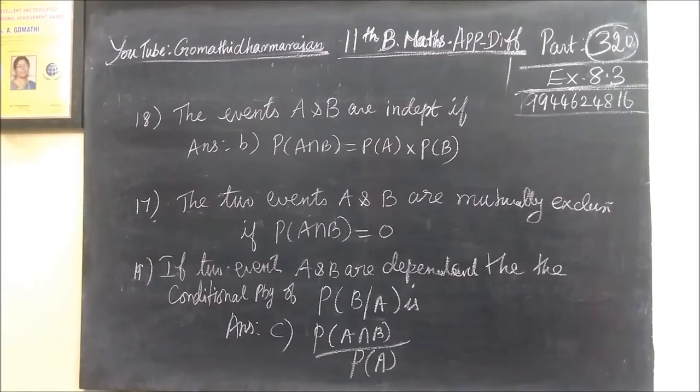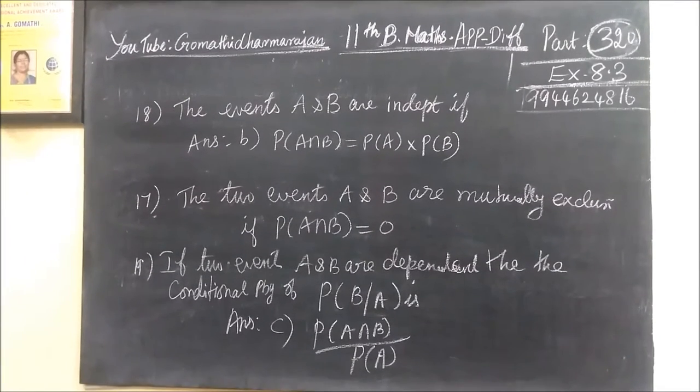Then if two events A and B are dependent event, therefore the conditional probability. Conditional probability, probability of B given A. We are going to find the probability of B. What is given? Given the event A is probability of A intersection B by P of A.